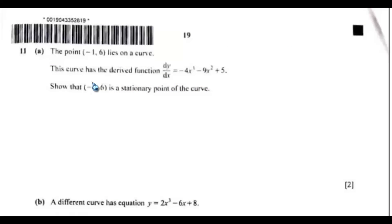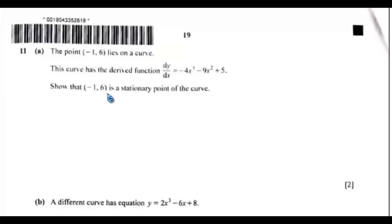Question 11a. The point negative 1 comma 6 lies on a curve. This curve has the derived function dy/dx equals negative 4x cubed minus 9x squared plus 5. Show that this point is a stationary point of the curve.